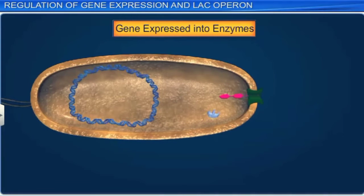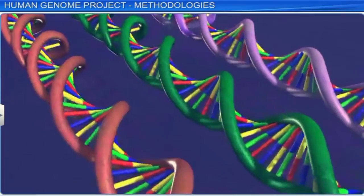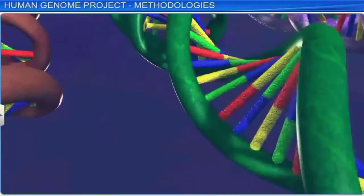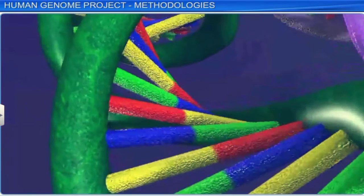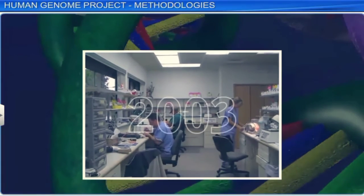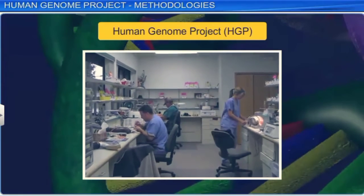In this way, the lac operon demonstrates how gene expression is regulated in an organism. In the past, biological researchers could study only one or two genes at a time. This changed completely in 2003, with the completion of the Human Genome Project.